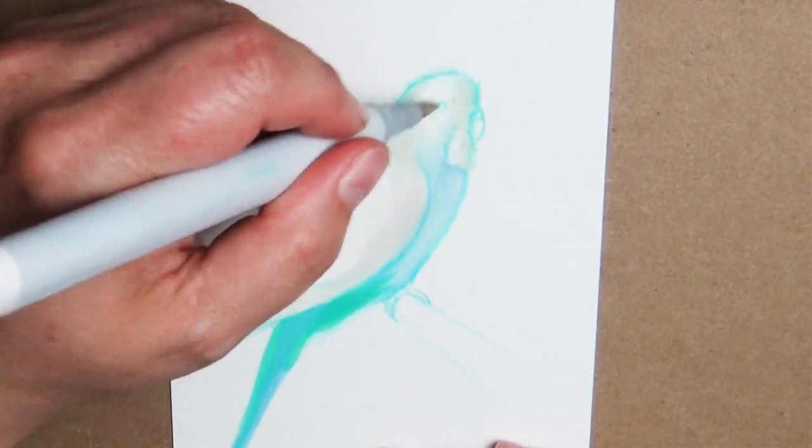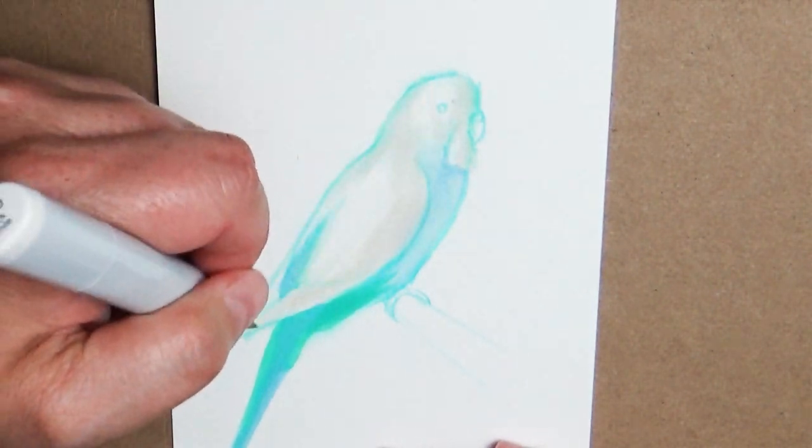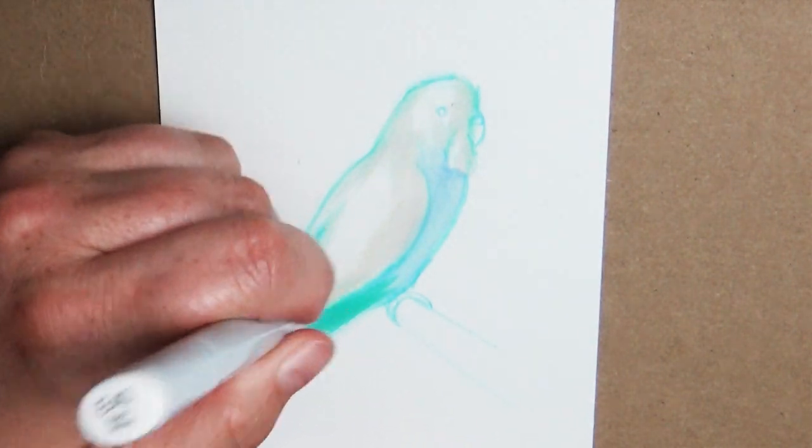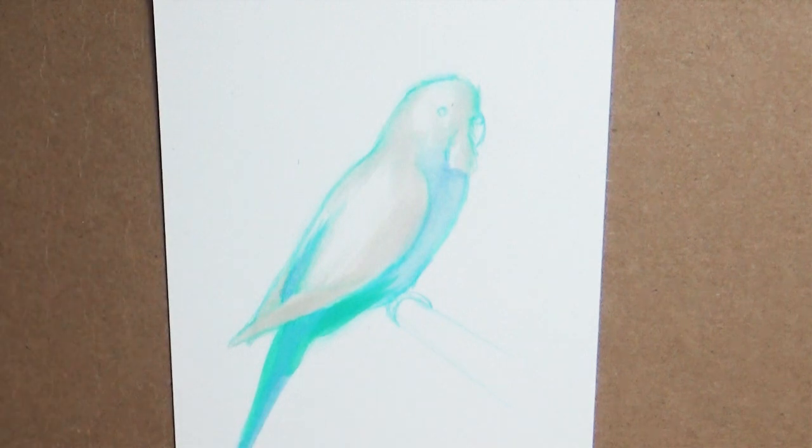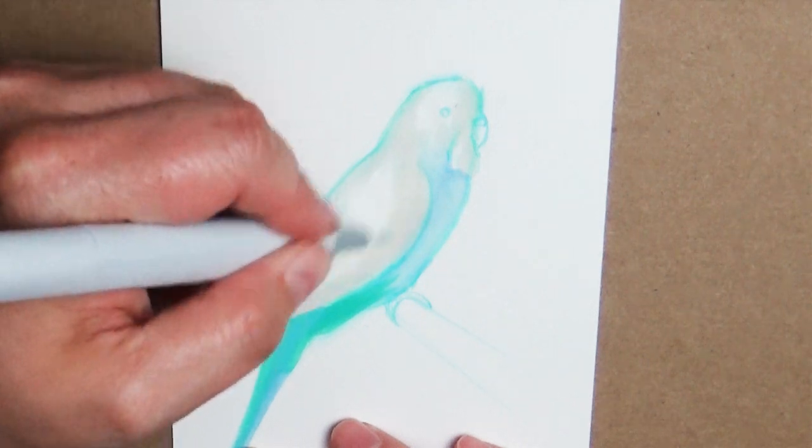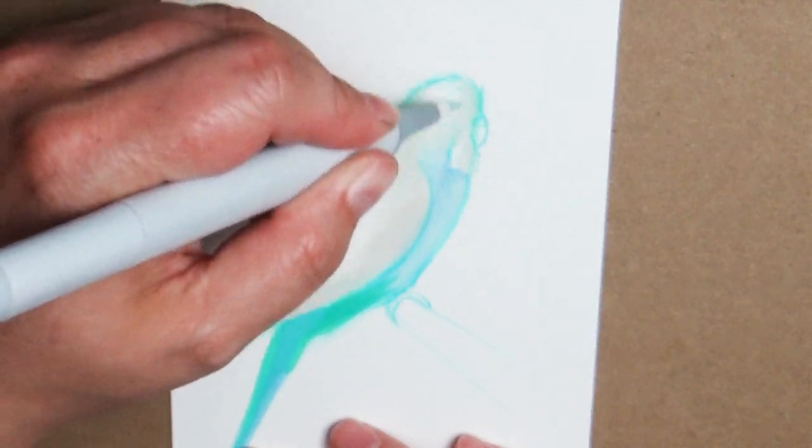So whatever you choose to color your parakeet with, whether you color it with paint or markers or crayons or color pencils, or you could just leave it as a sketch, it's completely up to you. If you are going to color it and you're having a part that has like the black striping with the white, go ahead and shade the white first.